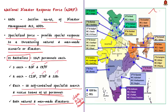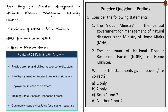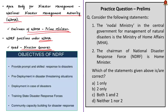16 different locations across the country house these battalions, selected based on the vulnerability profile of the country to cut down response time. The apex body for disaster management in India is the National Disaster Management Authority, chaired by the Prime Minister. NDRF functions under NDMA. The head of NDRF is designated as Director General — an IPS officer on deputation from Indian Police Organizations and a three-star officer.